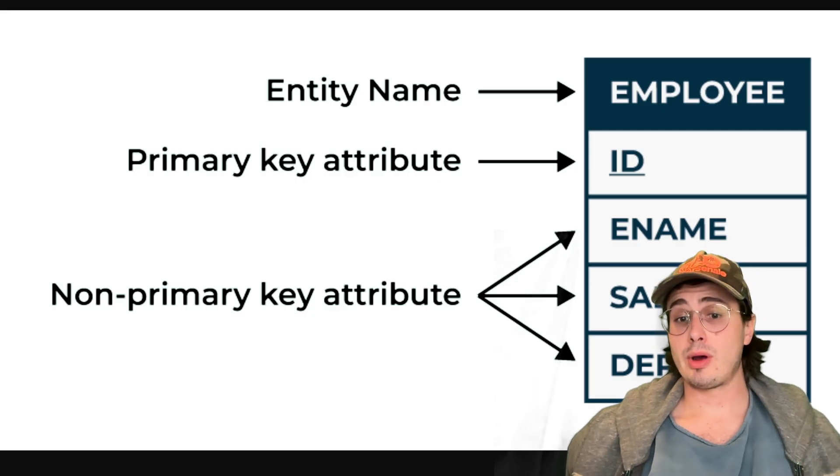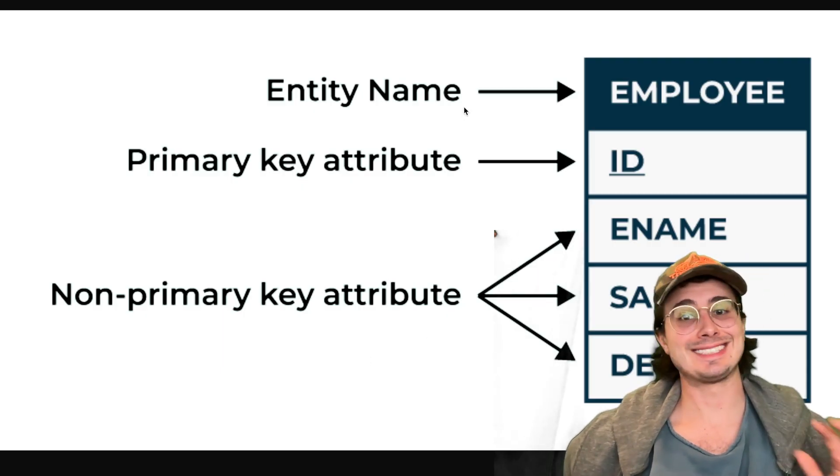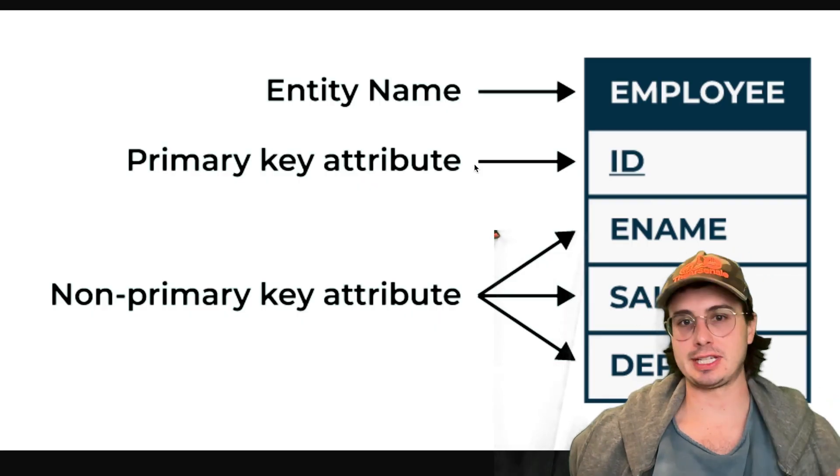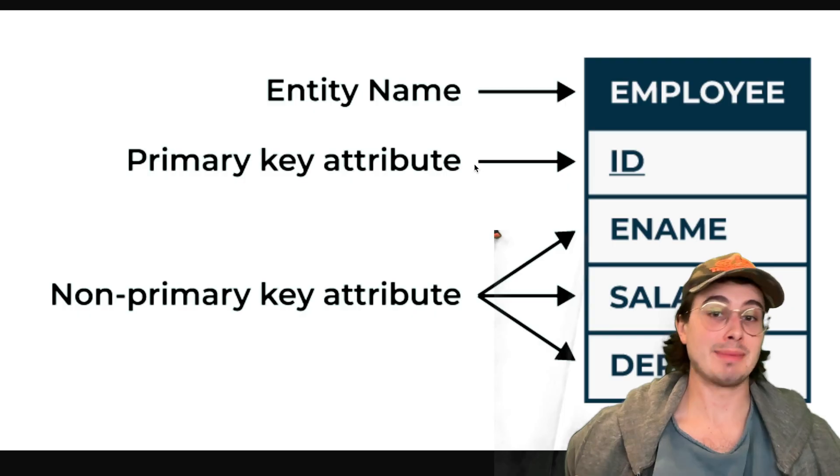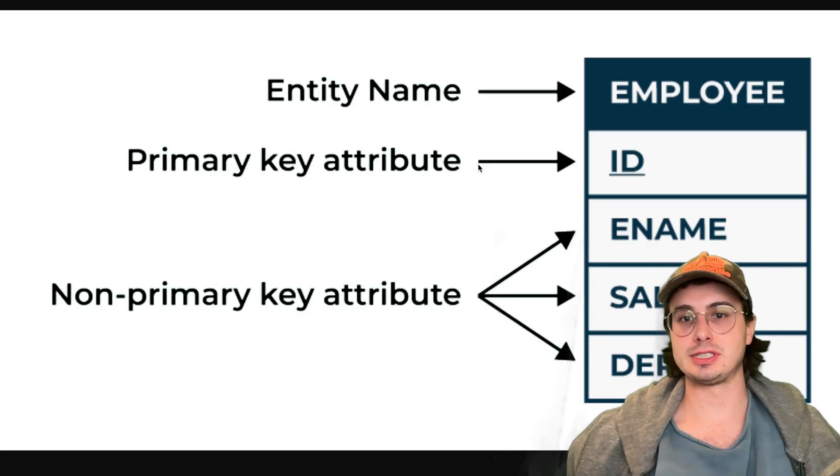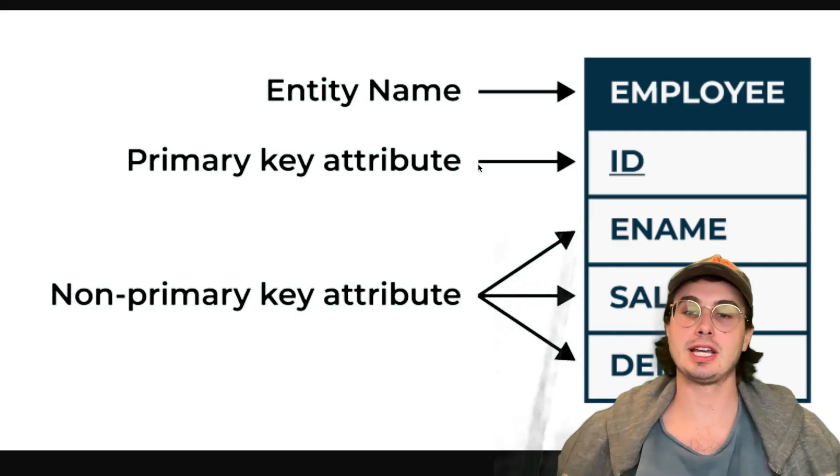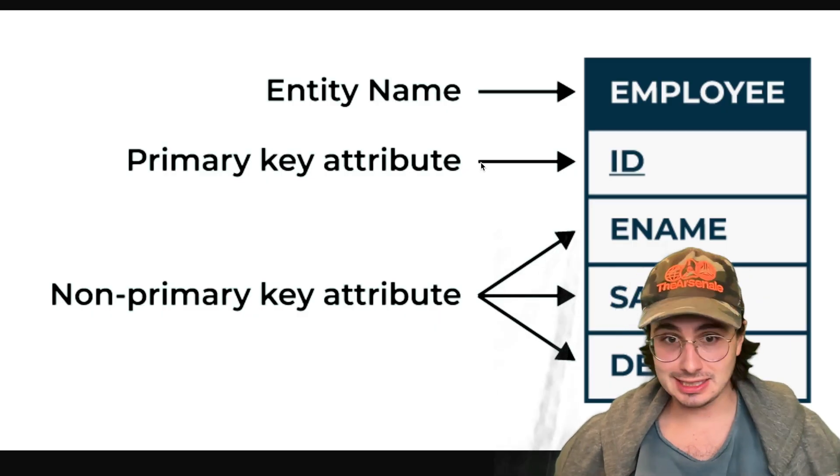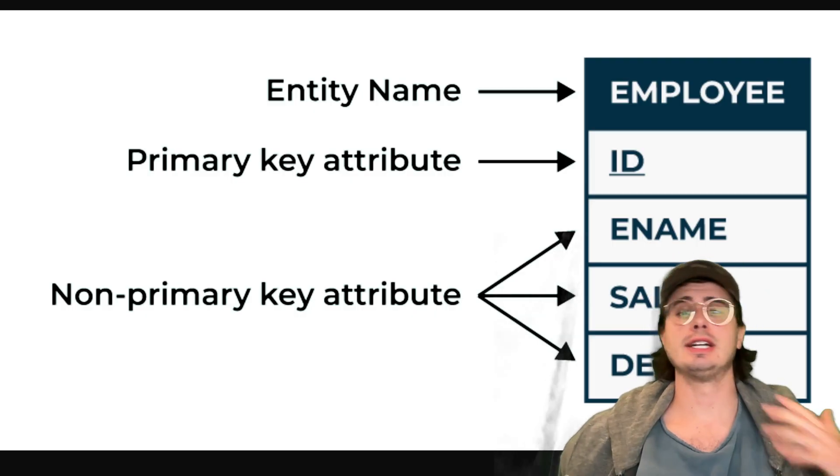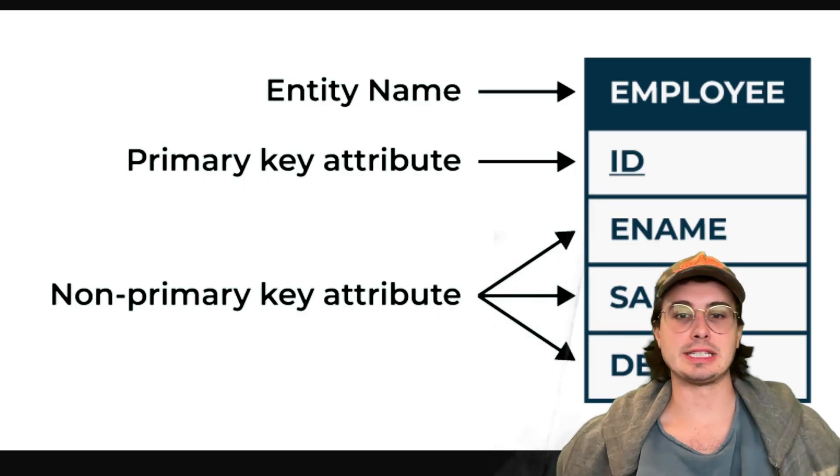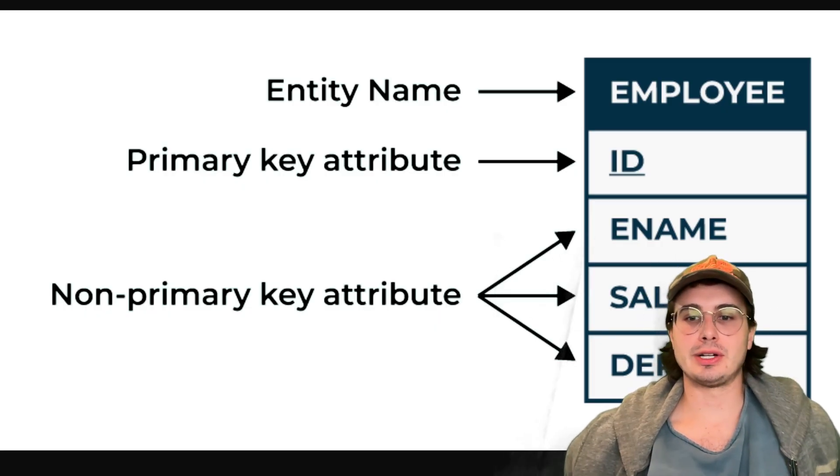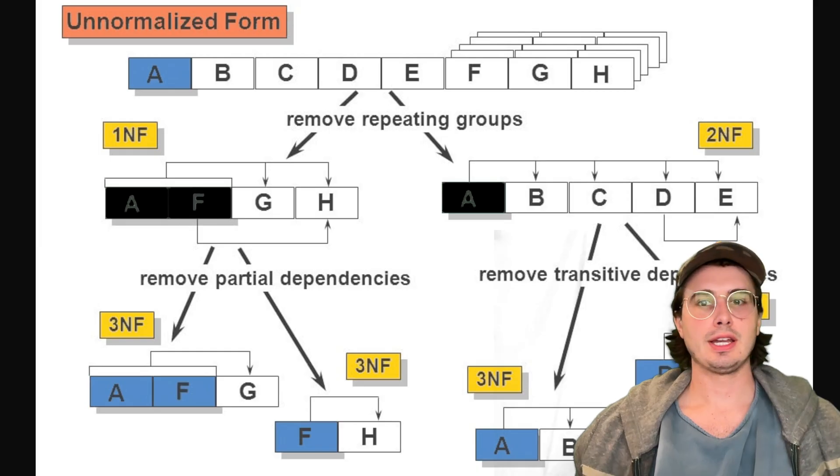Another common question is how do you identify entities and attributes in a business scenario? This is about showcasing effective data modeling for business use cases. Listen for nouns versus adjectives and properties - adjectives are typically attributes, nouns are typically entities. Look for relationships between entities, validate they're core business objectives, and consider the data lifecycle and business processes to identify what should be an entity versus an attribute.